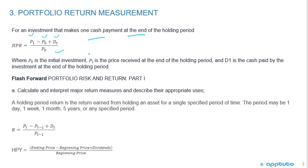Where P0 is the initial investment, P1 is the price received at the end of the holding period, and D1 is the cash paid by the investment at the end of the holding period. So we receive a dividend and we sell — for example, if we're using stocks — we receive a dividend and we sell the stock at the end of the period.